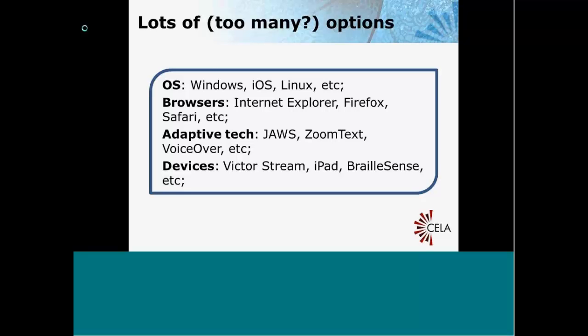And they might be using different adaptive technology, things like JAWS, ZoomText, or VoiceOver. So you get a lot of different combinations in terms of the kinds of ways that people might be downloading books.